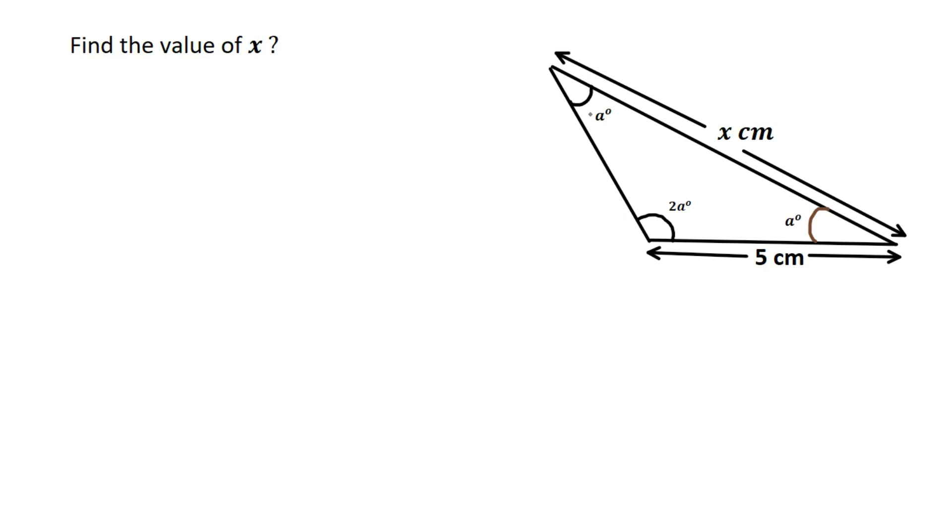You can see the triangle has angles of a degrees, a degrees, and 2a degrees. I'm going to apply a theorem: the sum of all three interior angles of a triangle is 180 degrees.